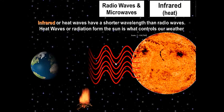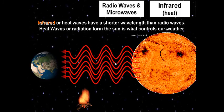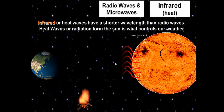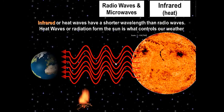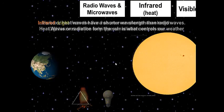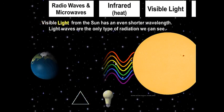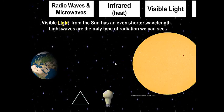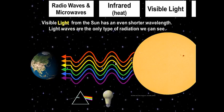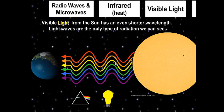The next type of radiation is infrared, or heat waves. The Sun gives off heat waves, which have a slightly shorter wavelength. Heat radiation from the Sun controls our weather. After infrared, visible light radiation is the kind we humans can see — light, which we use to see, is radiation. Light waves are the only type of radiation we can see.